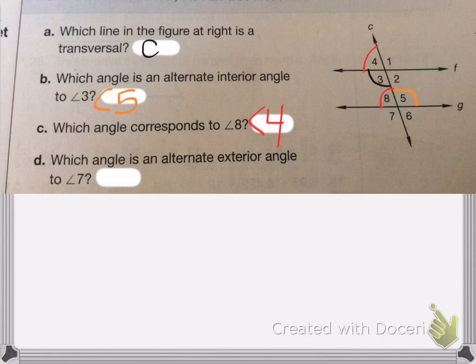And the last one is which angle is alternate exterior angle to angle 7. So here's angle 7 and I want the alternate exterior angle which would be angle 1, opposite side of the line, angle 1. Hey, that's it. Good luck with your homework.